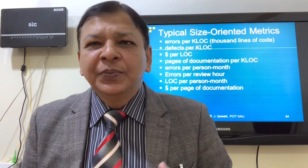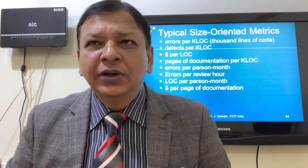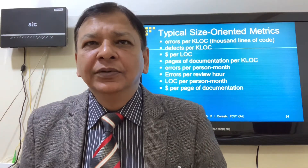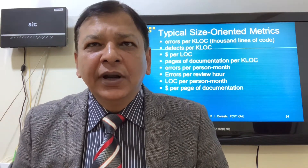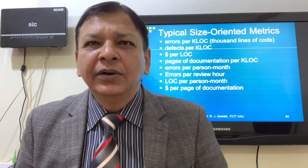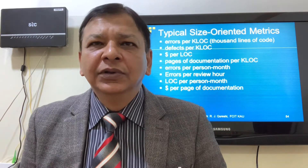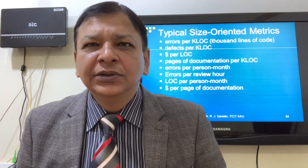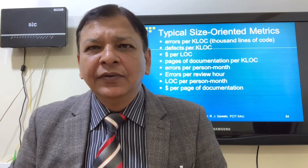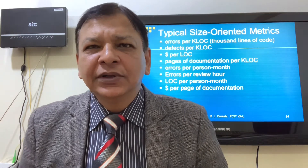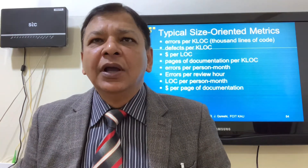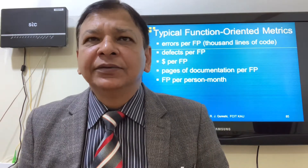Typical size-oriented metrics include: errors per kilo line of code (KLOC — kilo means thousand lines of code), defects per KLOC, cost per line of code, pages of documentation per KLOC, errors per person-month, errors per review hour, lines of code per person-month, and cost per page of documentation.